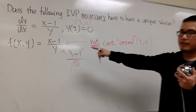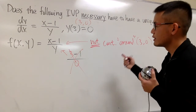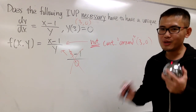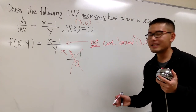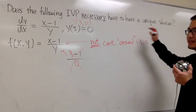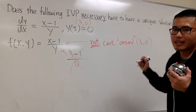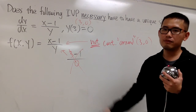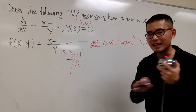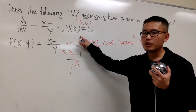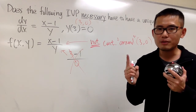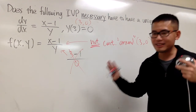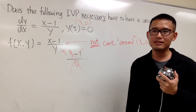That's not continuous around (3, 0). So the theorem fails right away. And let me ask you this idea again: can we be sure how many solutions that we have? No, we cannot say anything at all. This right here could still have exactly one answer, but I cannot be sure — I cannot make any promise to you.